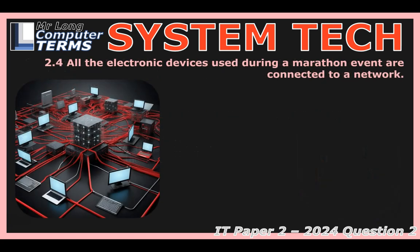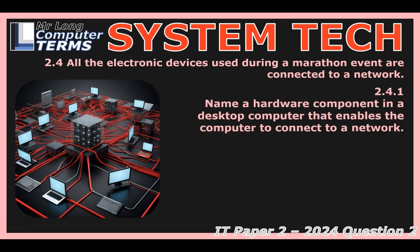All those devices at the marathon — timing gates, cameras, computers — are all networked. What's the actual hardware inside a desktop PC that lets it connect to a network? That piece of hardware is the network interface controller — most people call it an NIC, or sometimes a network card. It's the hardware doorway that lets your computer talk to the network, translating data into signals that can travel over a cable or through the air wirelessly, and vice versa.